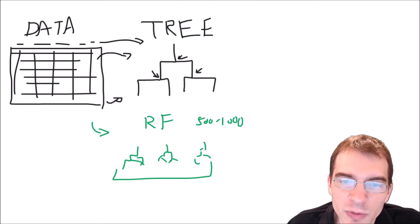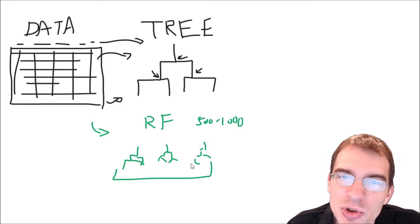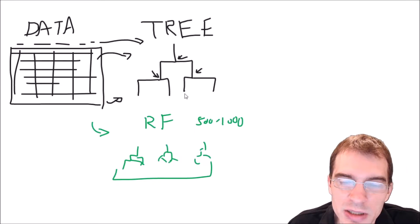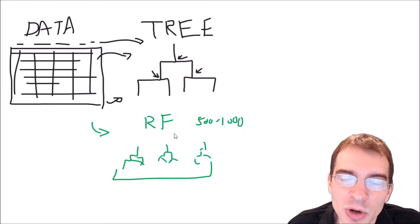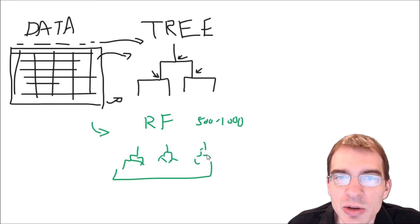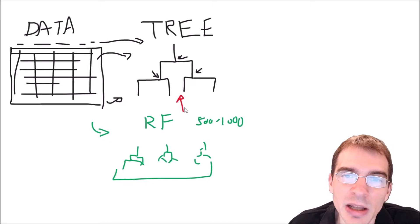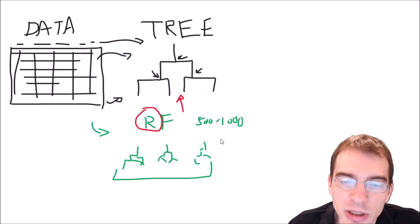You might be saying to yourself: decision trees were deterministic, so how do you grow many different trees and come up with a different result? Because if each of the many trees were grown deterministically, they would all be identical, and the averaged result would be the exact same thing as the first decision tree we made. That's where the random part of random forest comes into play.